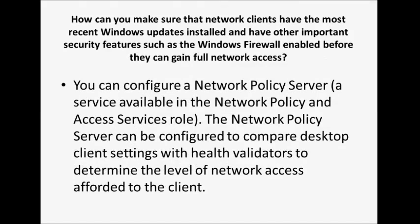How can you make sure that network clients have the most recent Windows updates installed and have other important security features such as the Windows Firewall enabled before they can gain full network access? You can configure a Network Policy Server, the service available in the Network Policy and Access Services role. The Network Policy Server can be configured to compare desktop client settings with health validators to determine the level of network access afforded to the client.